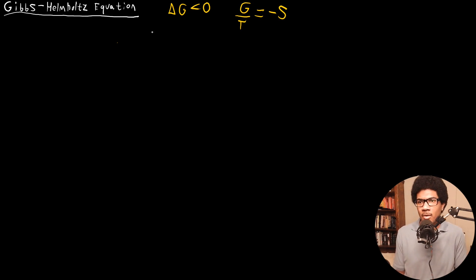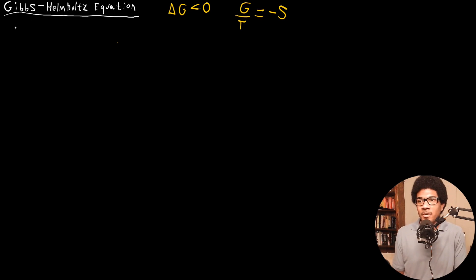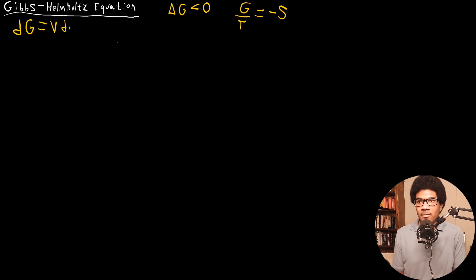Keep in mind this relationship and how we got it. If you need to review it, go back and watch that video again. The starting point for the Gibbs-Helmholtz equation derivation is going to start with the differential for the Gibbs energy, where we have VdP minus SDT.